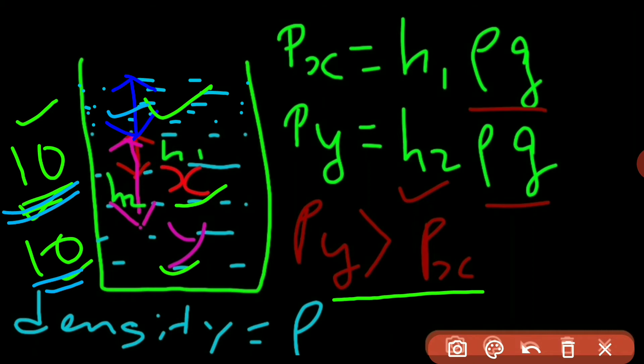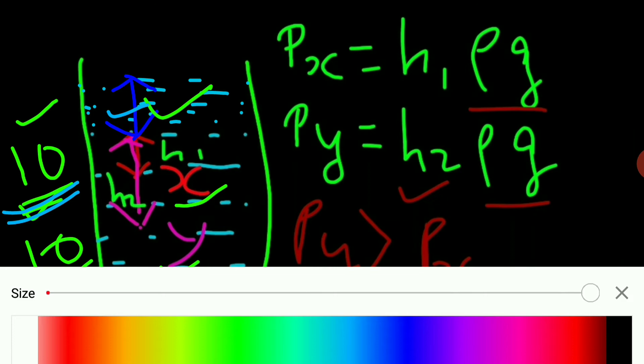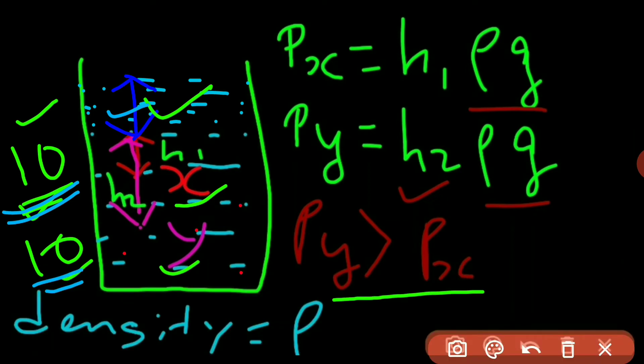If there are any other points in this particular liquid — X, Y, Z, any other points — the pressure exerted at one point is equally transmitted to the other points as well. That means each one of these new points will also get an extra 10 Pascals of pressure. And this can be demonstrated by the experiment.